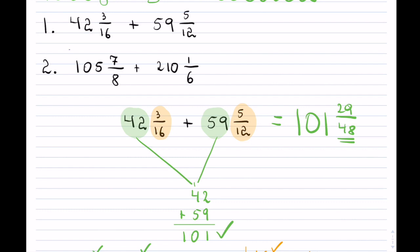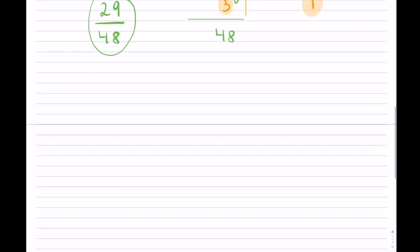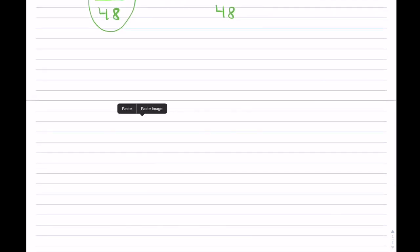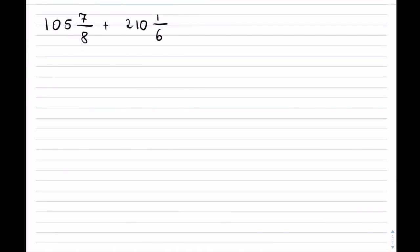Let's take a look at the second example, this one right here. So in our second example, we have 105, and we have 210 as our whole components. And we're adding. Now, when we add, so we can take these two numbers.